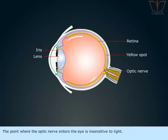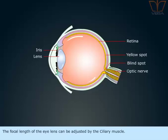The point where the optic nerve enters the eye is insensitive to light. Therefore it is known as the blind spot. The focal length of the eye lens can be adjusted by the ciliary muscle.